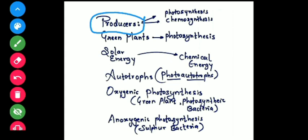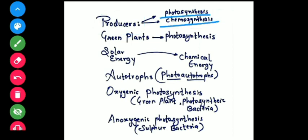Producers are organisms that can prepare their own food through photosynthesis or chemosynthesis. Photosynthesis means synthesizing food in the presence of light. Chemosynthesis is when organisms produce food without requiring light — instead they use a chemical substance, and from the degradation of that chemical substance, the released energy is used to prepare their own food. Both photosynthetic and chemosynthetic organisms are considered producers as they are independent.